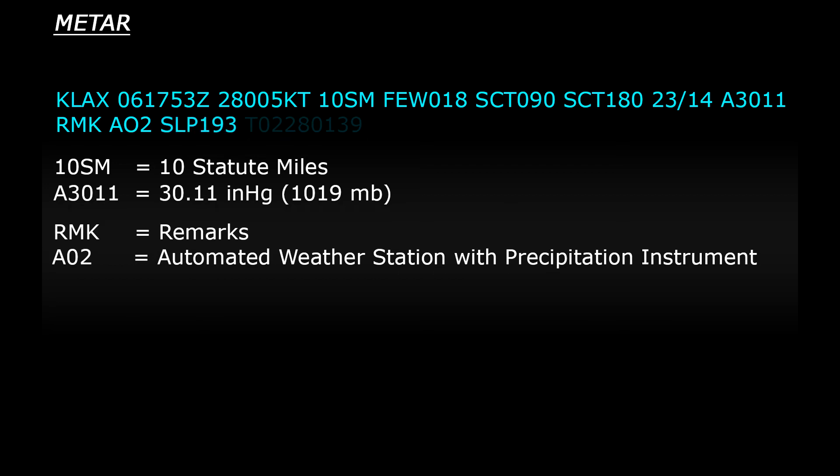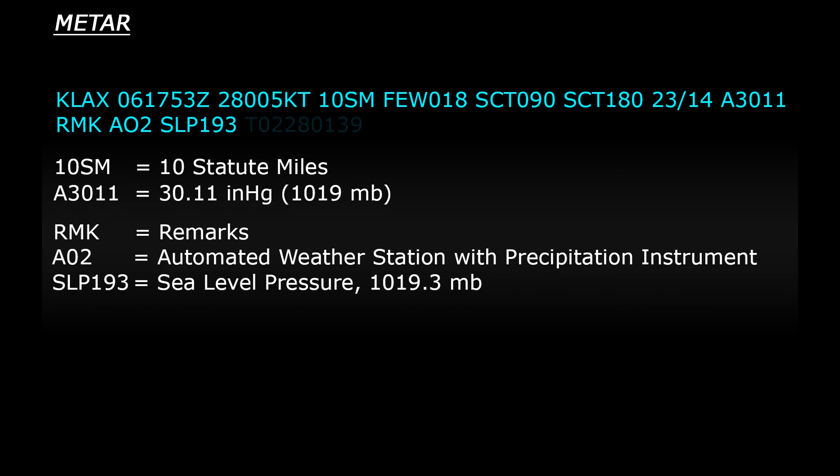Next you have SLP, which stands for sea level pressure. Interestingly enough, this is given in millibars and the three numbers give the pressure down to a tenth of a millibar. So this example reads SLP 193, which means the pressure at sea level is 1019.3 millibars. See how the numbers relate to the end of the pressure reading there.